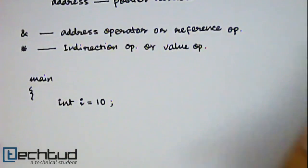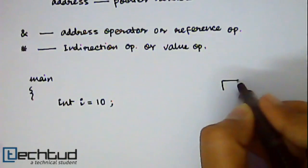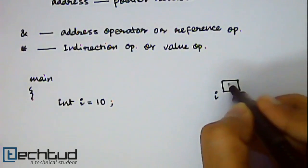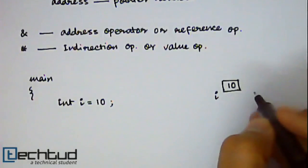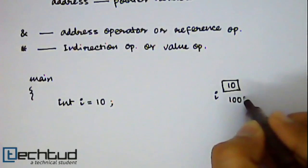And you assign value 10 in it. So what happens? During compilation of the program the compiler will assign a particular memory location with name i. And it puts the value 10 inside that memory location. So let's say the address of this particular memory location is 1000.